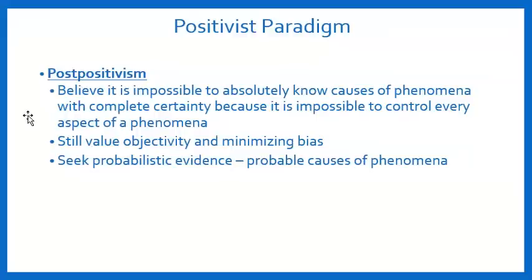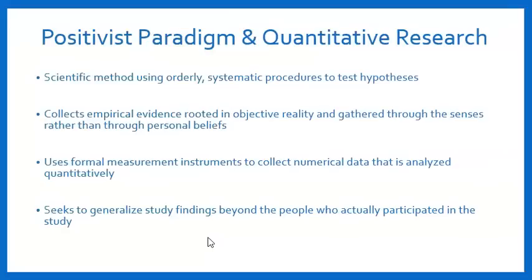While a post-positivist acknowledges they can't control everything, they still strongly value objectivity and want to minimize bias. They're still looking for cause and effect, but rather than saying with 100% certainty that X caused Y, they'll say X probably caused Y because these things were held constant. As you may have guessed, the most common type of research under positivism is quantitative research. If you learned anything about the scientific method in school, that's essentially what we're talking about.